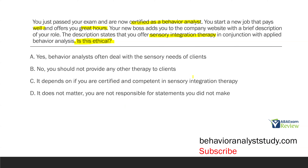Option C: it depends on if you are certified and competent in sensory integration therapy. Absolutely — you have to be certified and competent in this type of therapy to claim that you can do it. You can't just state on a website that you offer sensory integration therapy because you have a sensory room. This is a specific service that needs to be vetted. Option D: it does not matter — you're not responsible for statements you did not make. This is where the specific ethical code comes in: the ethics code states that you, the behavior analyst, are responsible for public statements about you, even ones you don't make. You didn't write the description — your boss did — but you're still responsible. So is it ethical? It depends on whether you are certified and competent in this type of therapy.